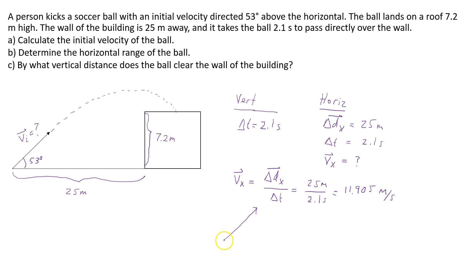So that's the horizontal component of the velocity, 11.905. The angle is 53. The vertical component of the velocity we don't know, but we don't really need to know it for this question. So V initial is what we're looking for. In order to find the initial velocity, I'm going to use a cosine ratio. So cosine 53 is going to equal adjacent divided by the hypotenuse.